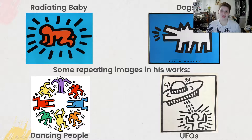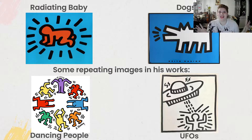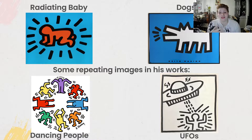Some of the repeating images he included in his artworks include the radiating baby — just a simplified version of a baby with lines coming out of it that make it look like it's shining and radiating, like it has light coming off of it. He also included many dogs, and as you can tell, that dog is very simplified. I personally have never seen a dog that looks like that, but when you look at it you can guess it's a dog because it's just a very simplified version of one.